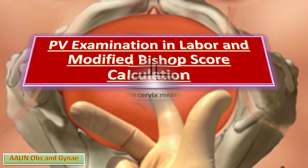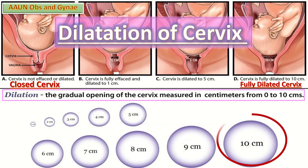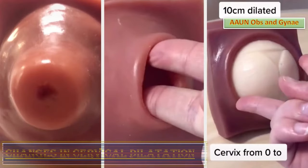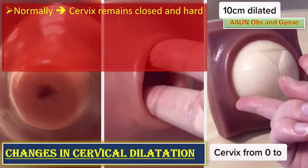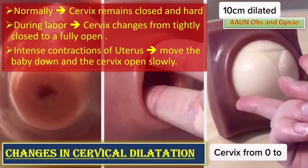The first point is about the assessment of dilatation of the cervix. It is defined as the gradual opening of the cervix, measured in centimeters from 0 to 10. Zero means closed cervix, and 10 centimeters means fully dilated cervix. Normally the cervix remains closed and hard. During labor, the cervix changes from a tightly closed entrance to a fully open exit for the baby, as intense uterine contractions help move the baby down, putting pressure on the cervix and causing it to open slowly.